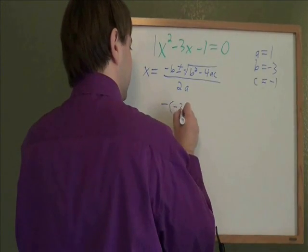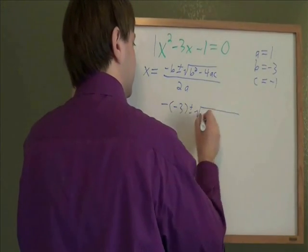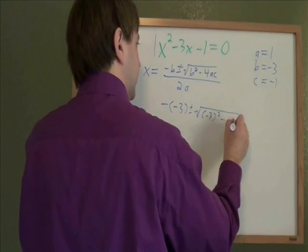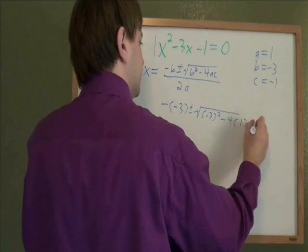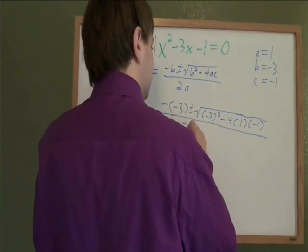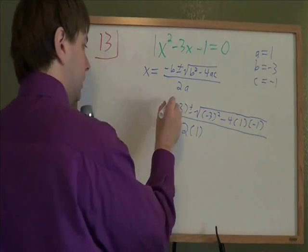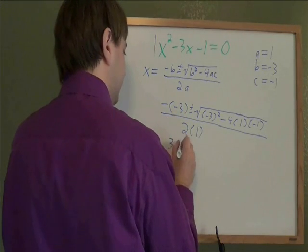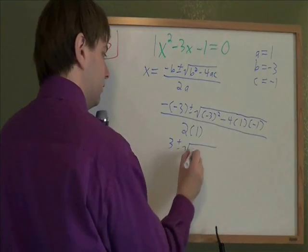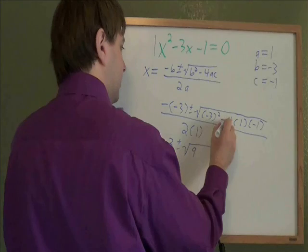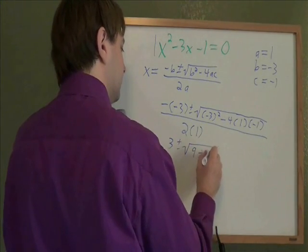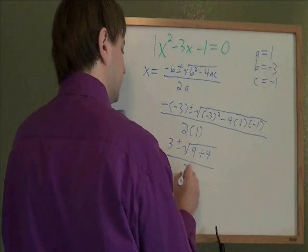And then we just start plugging those in. Negative 3 plus or minus square root negative 3 squared minus 4 times a, which is 1, times c, which is negative 1, all over 2 times a, which is 1. Negative negative 3 is a positive 3. Negative 3 squared, negative 3 times negative 3 is 9. Minus 4 times 1 is minus 4, that times minus 1 is plus 4. And 2 times 1 is 2.